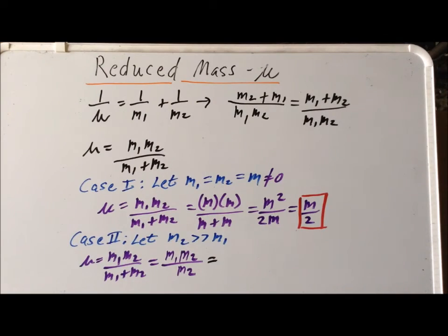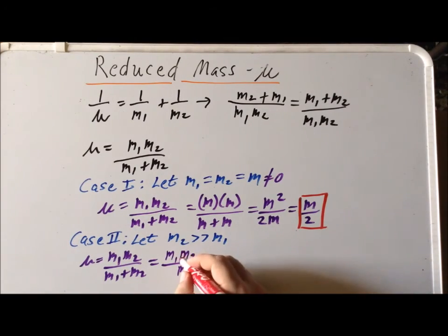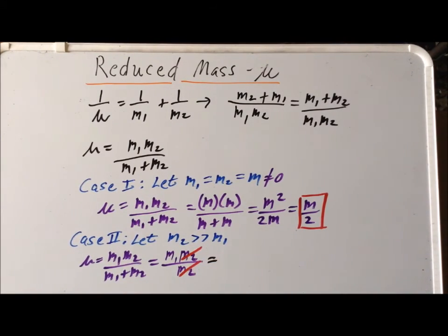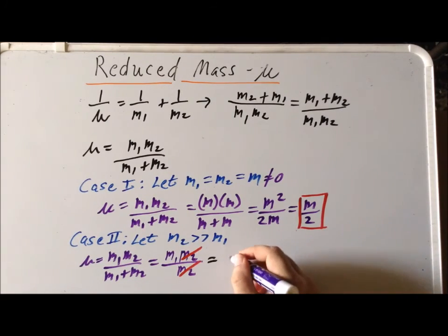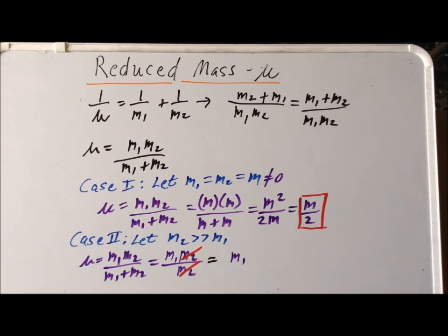So we can use the cancellation law, and we realize that we're left with, in this case, a reduced mass of M1. So this tells us, in the case where we have two objects with very, very different masses, that the reduced mass is essentially equal to the mass of the smaller, the lighter object.